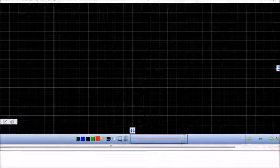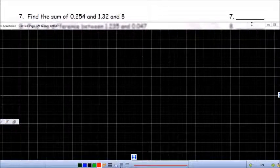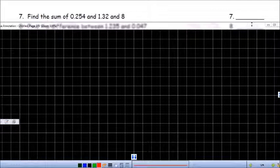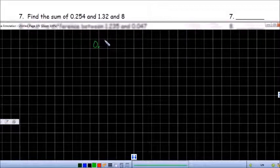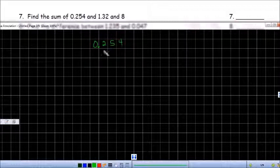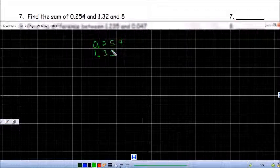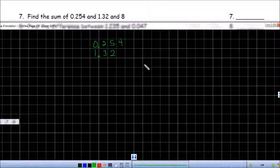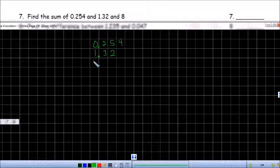I'm going to see if I can minimize that so I can see my work. Those are my numbers right there. I'm going to line them up using the grid paper. The first number is 0.254. The next number is 1.32. And the last number is an 8. 8 is a whole number, right? So any number that has a whole number has a decimal behind it. So the decimal is right here for 8.